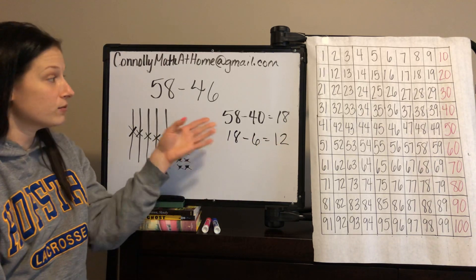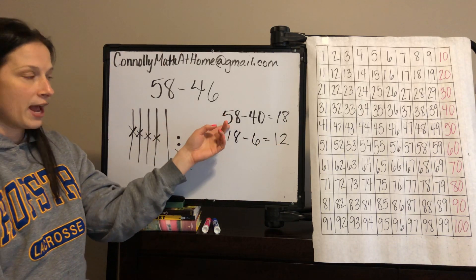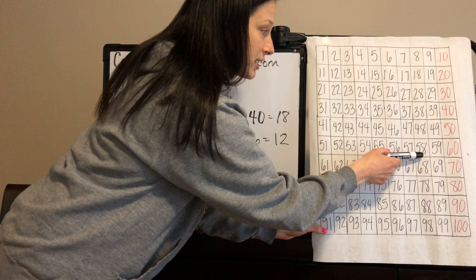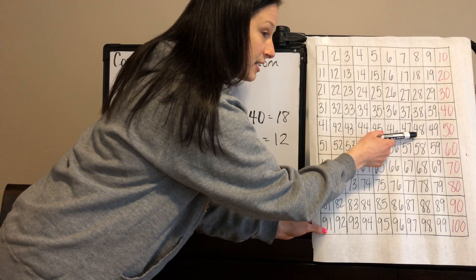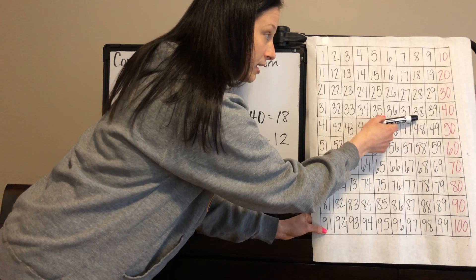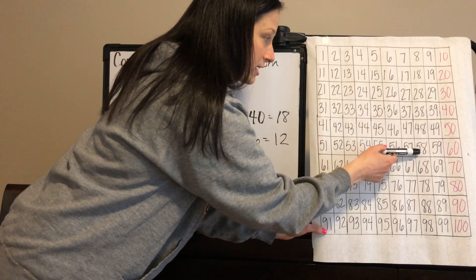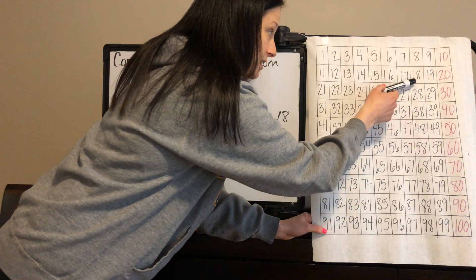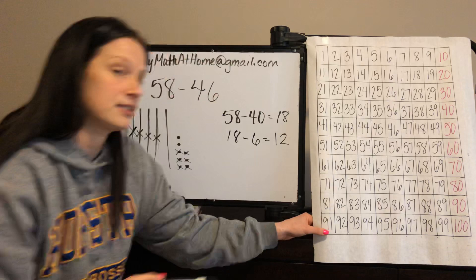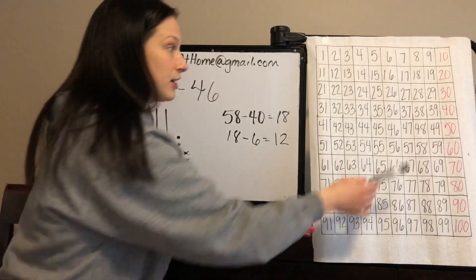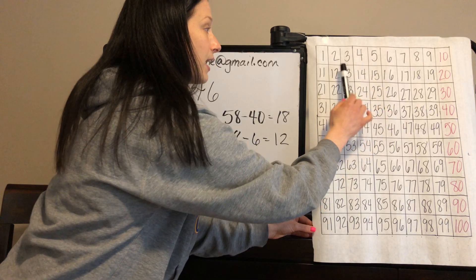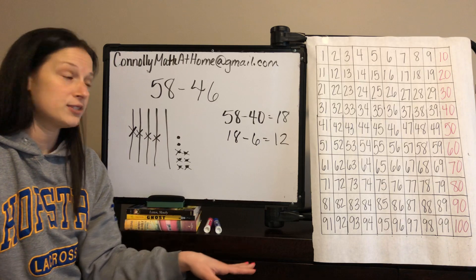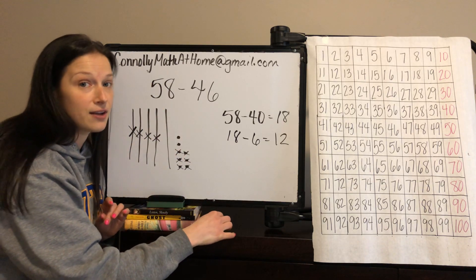The hundreds chart becomes very important when students are thinking about what happens when you subtract a group of 10. If you're at 58 and subtract a group of 10 at a time: 48, 38, 28, 18 — subtracting one, two, three, four groups of 10. Five groups of 10 minus four groups of 10 leaves a 1 as the digit in the tens place. Then on the hundreds chart you count back 1, 2, 3, 4, 5, 6 and land on 12. That's a tool they'll use after building a strong understanding of the representation.